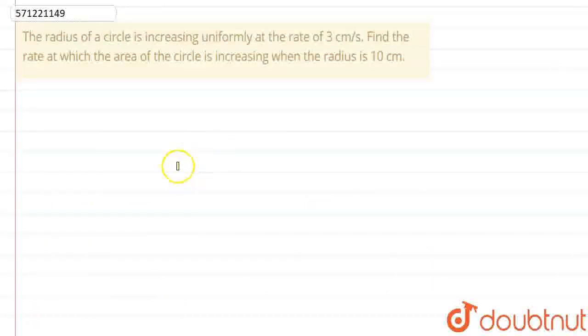Hello students, let us read this question. It is given as: the radius of a circle is increasing uniformly at the rate of 3 cm per second. Find the rate at which the area of the circle is increasing when the radius is 10 cm.